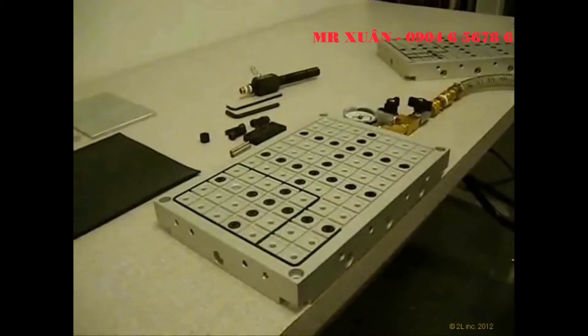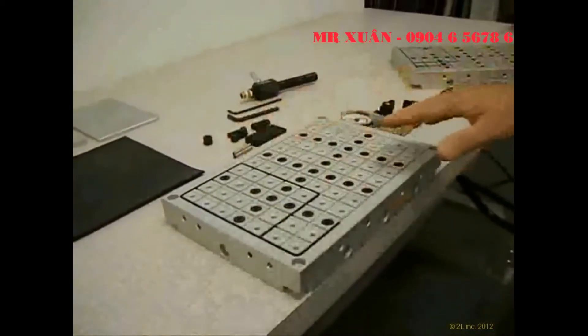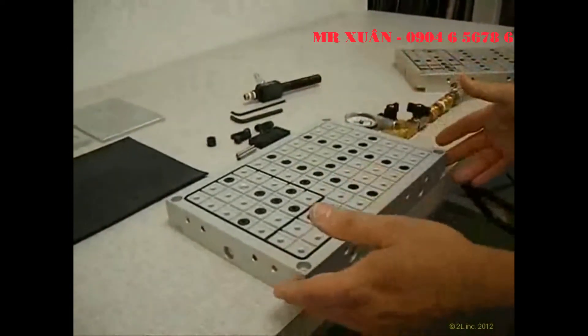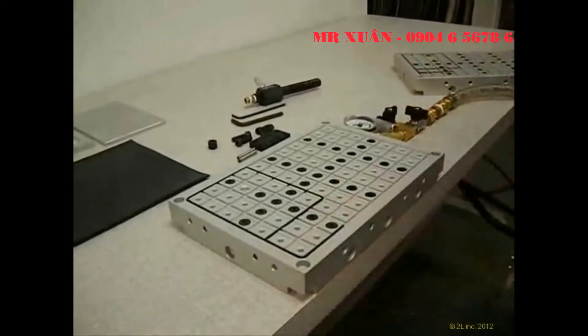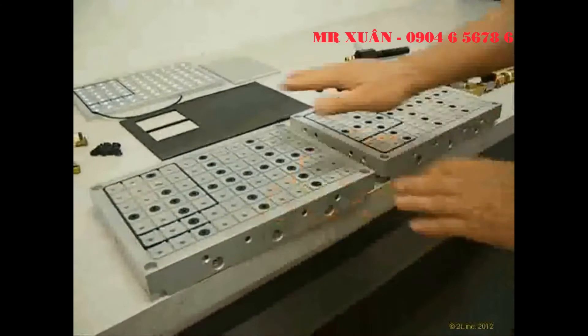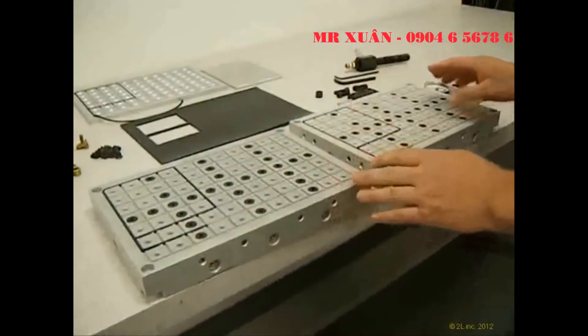The next item I wanted to show you was if you needed a working area that is larger than the eight inches by 12 inch standard size vacuum chuck, how simple it is to connect multiple systems together. All of the vacuum chucks are ground perfectly flat on all six sides so they're all exactly the same size.